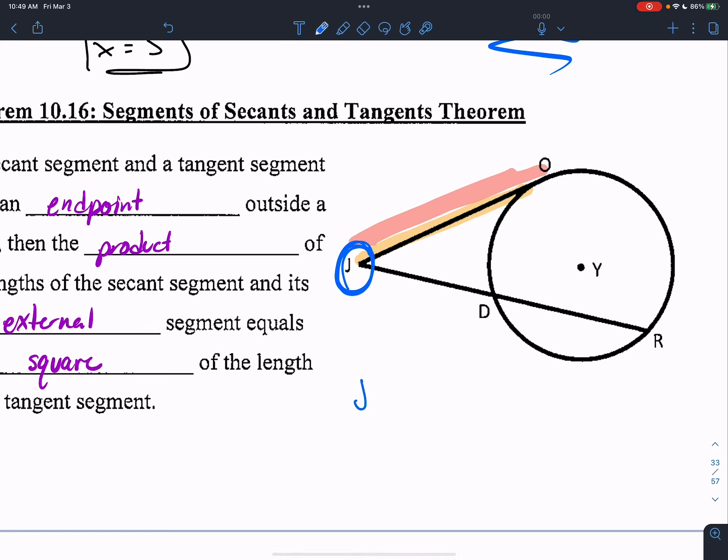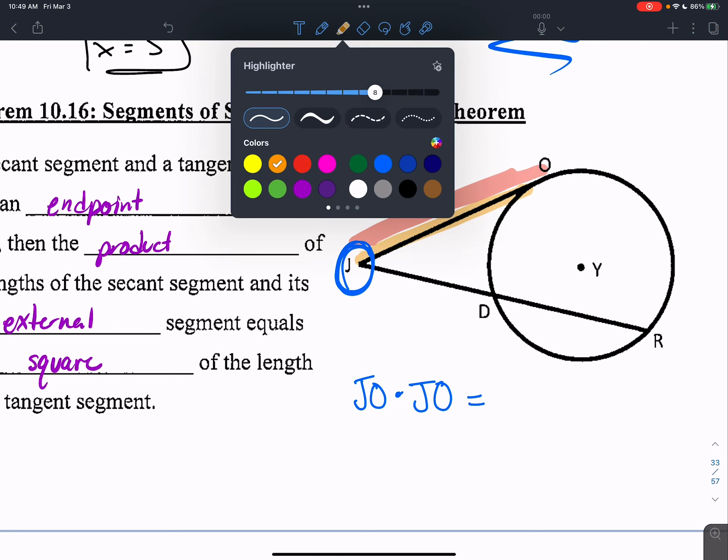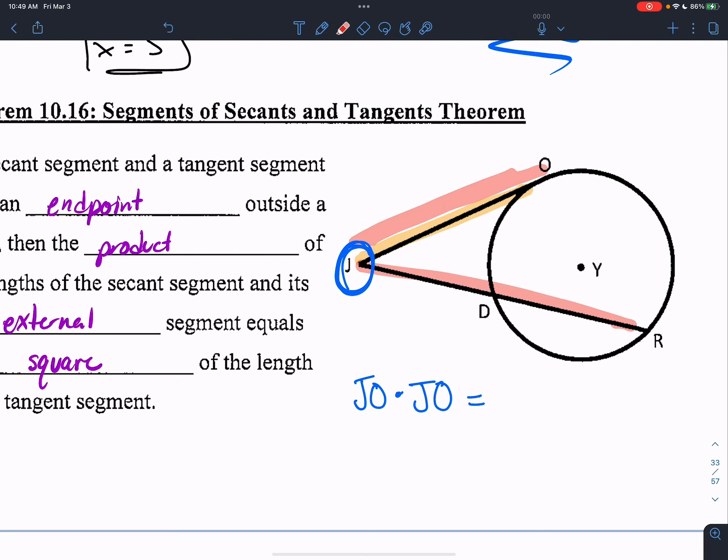So I have J-O times J-O, and set that equal to the whole thing over here, which is J-R, times, once again, the outside part, J-D.